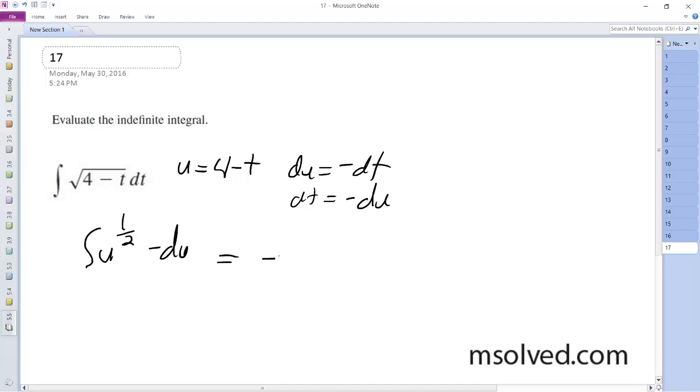We sub this in, we get negative 2 thirds u to the 3 halves plus c, and simplified down, this becomes negative 2 thirds 4 minus t raised to the 3 halves plus c. That's it.